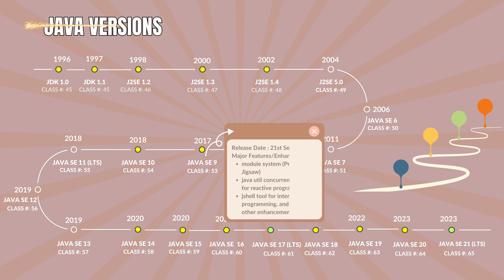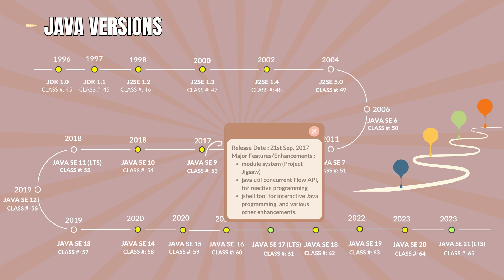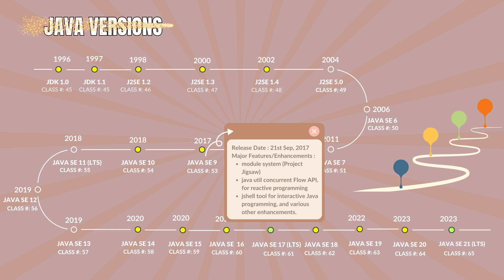Java 9.0 with the class file version 53. It was released on 21st September 2017. The major features and enhancements are the introduction of the Module System (Project Jigsaw) for modularization of the platform, the Java Util Concurrent Flow API for reactive programming, the HTTP/2 client, and the JShell tool for interactive Java programming, along with various other enhancements.